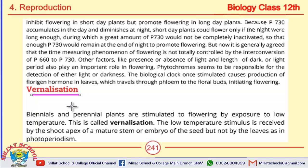Biennial and perennial plants are stimulated to flowering by exposure to low temperature — we call it vernalization. Biennial plants grow over two years and perennial plants grow year after year. When there is low temperature that induces flowering, we call it vernalization, and this is the stimulus of the shoot apex.